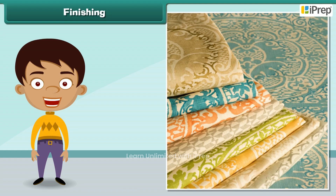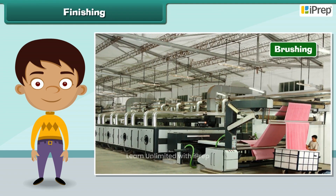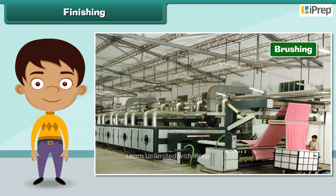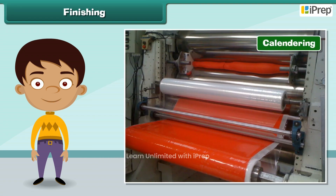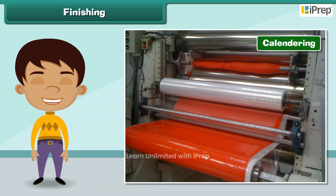The process that improves the appearance and usefulness of a fabric is known as finishing. Some important finishing treatments given to a fabric are brushing and calendering. Brushing removes short and loose fibers from a fabric. Calendering improves the smoothness and shine of a fabric.